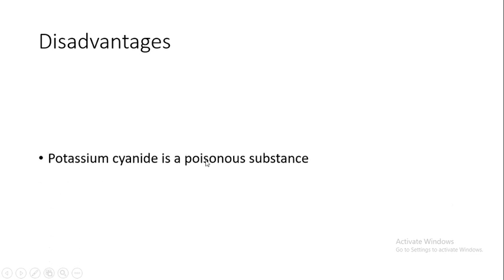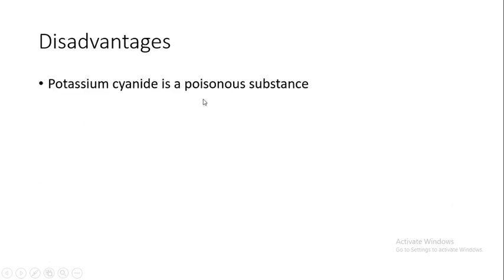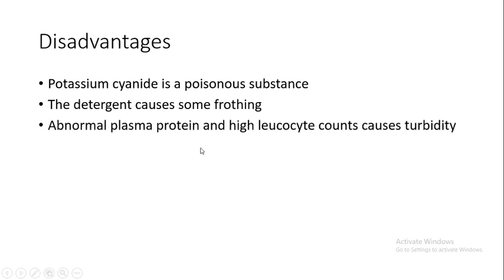Disadvantages: Potassium cyanide is a poisonous substance. The detergent causes some protein precipitation. Abnormal plasma protein and high leukocyte counts cause turbidity. Centrifuging the diluted blood can help overcome the turbidity.